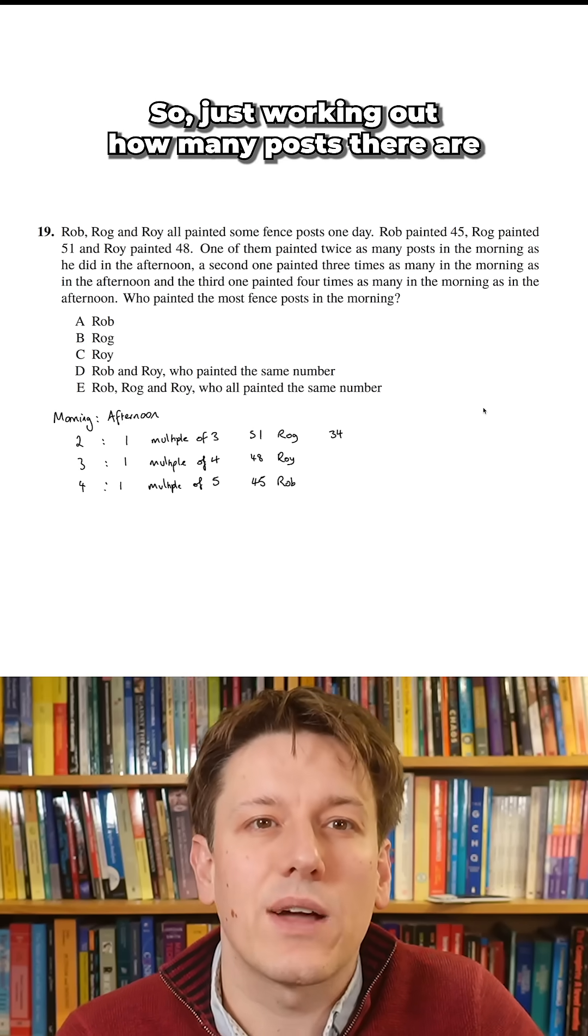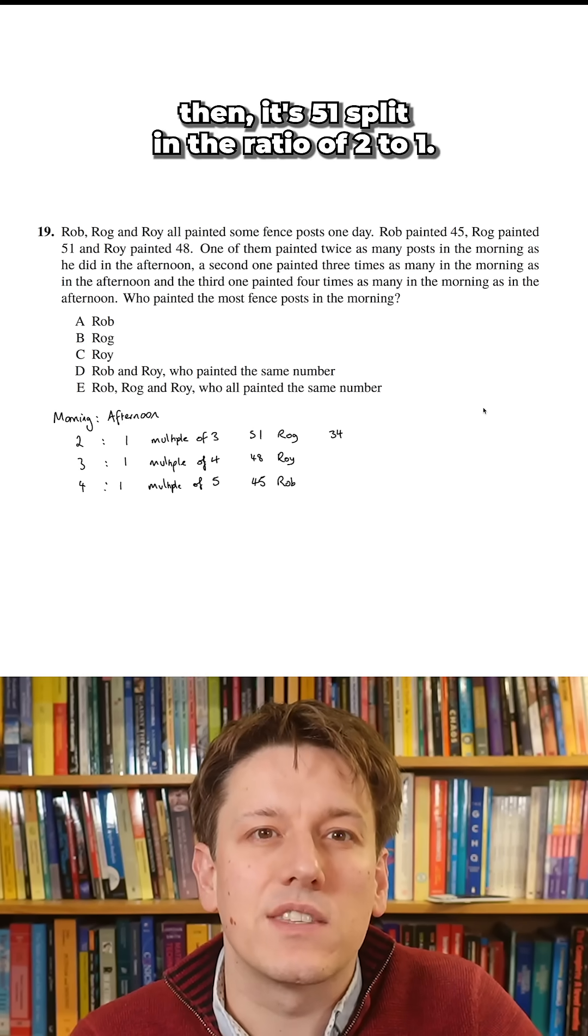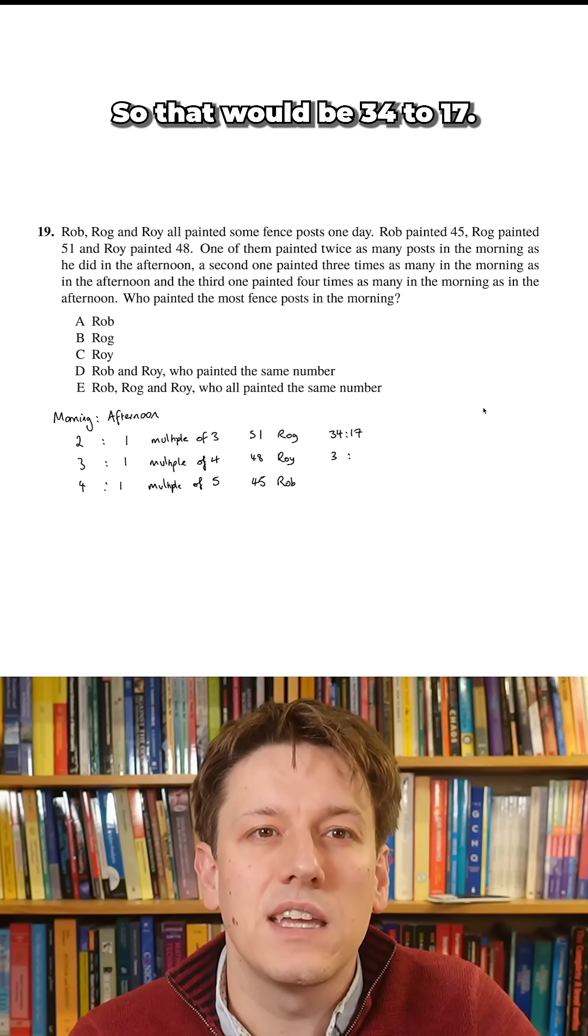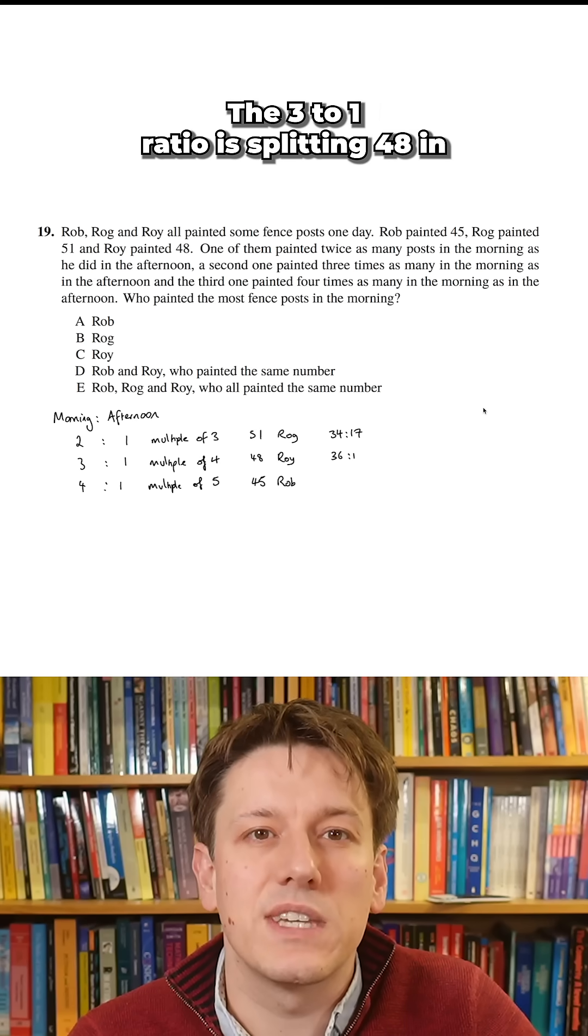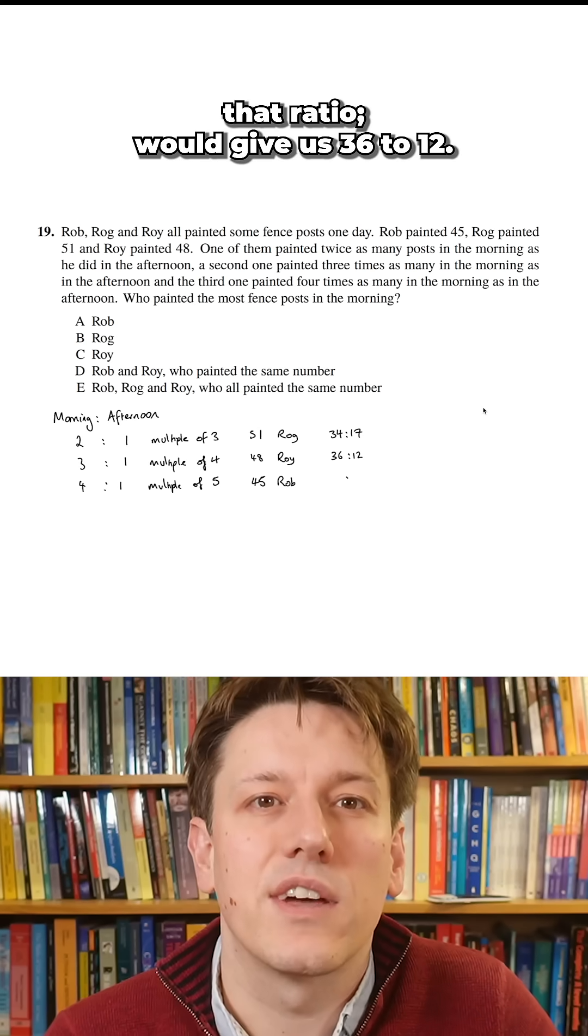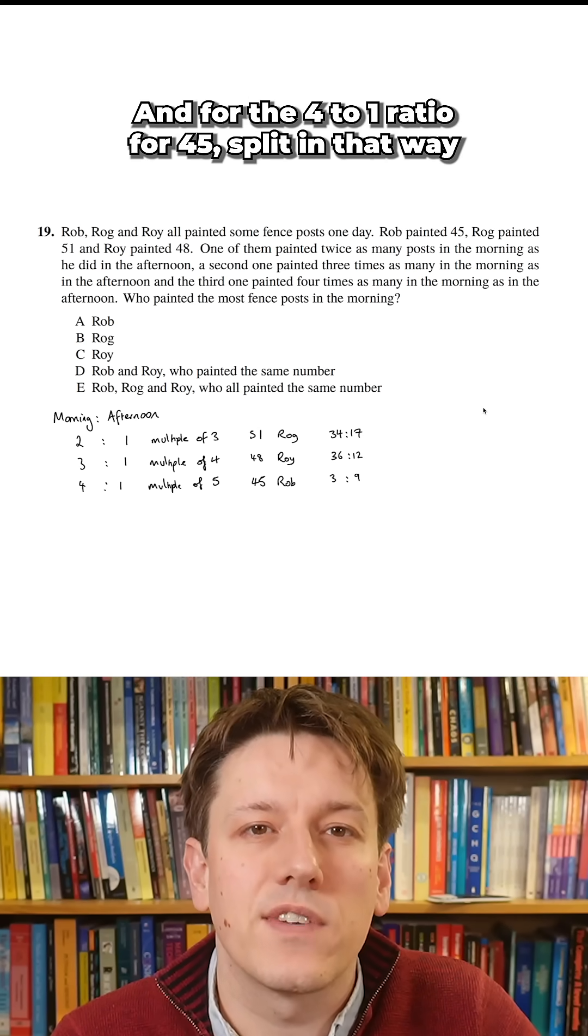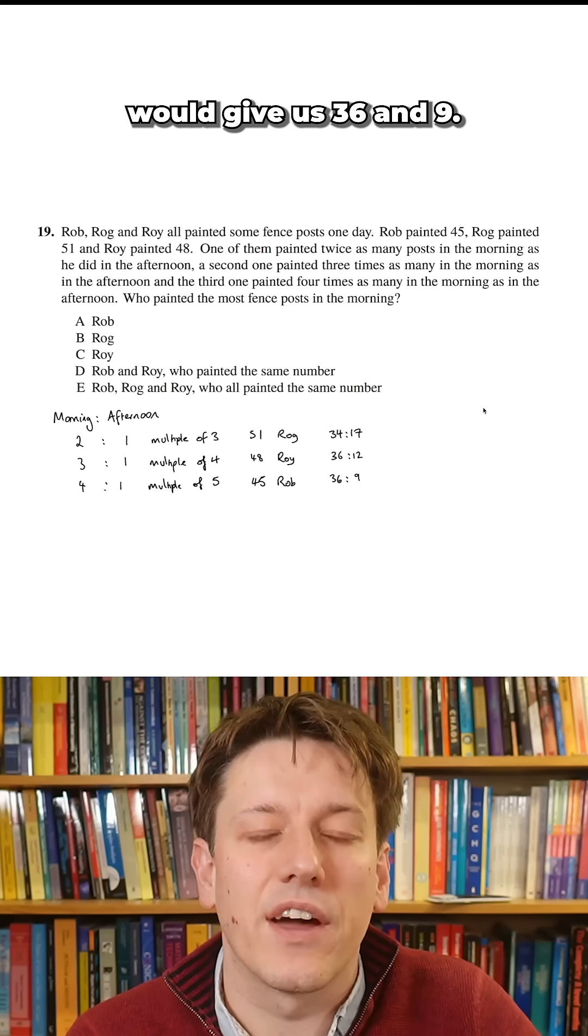So just working out how many posts there are then, it's 51 split in the ratio of two to one so that would be 34 to 17. The three to one ratio splitting 48 in that ratio would give us 36 to 12 and for the four to one ratio for 45 split in that way would give us 36 to 9.